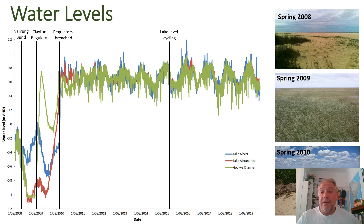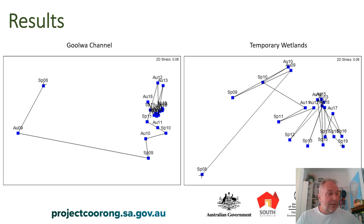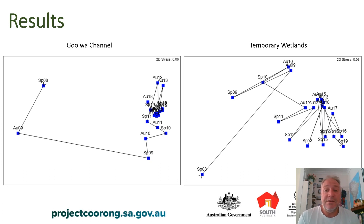Three photos show my monitoring site at Tauwitchere Point during spring 2008 and 2009 when water levels were low, and in spring 2010 when water levels were reinstated, showing a shoreline with water. We recorded 154 species of plants during the condition monitoring program, but 75 of them were weeds; however, 31 of those weed species were only recorded when lake levels were low.